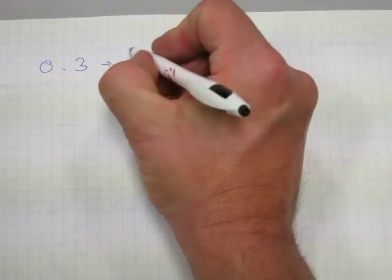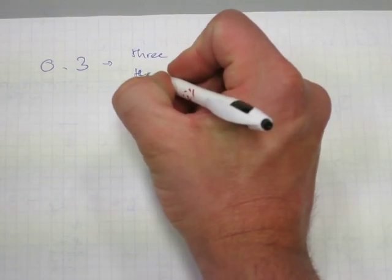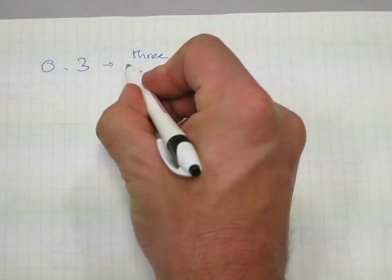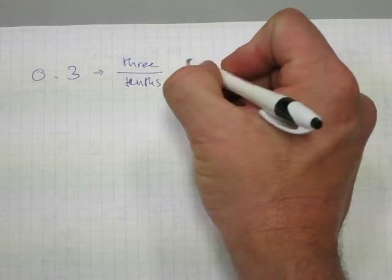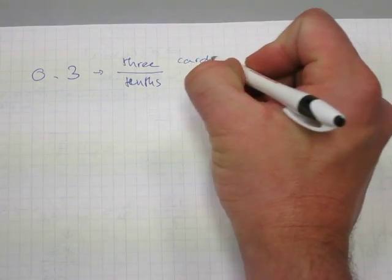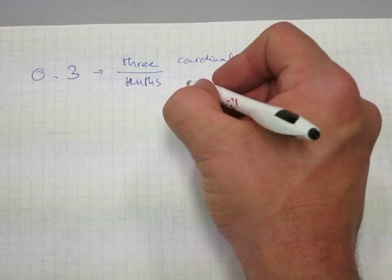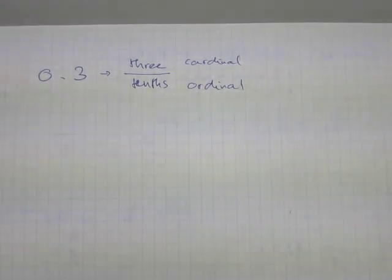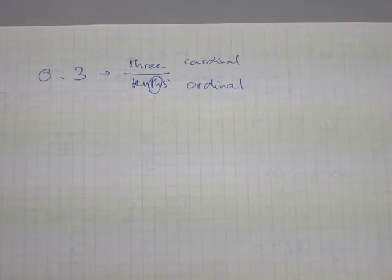Listen to it, 3 tenths. And you can format it right away as a fraction. 3 is a cardinal number, a number in a cardinal format. And tenths is a number in the ordinal format. It's also in plural and it's got this Th in it, tenths.